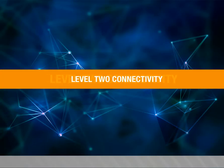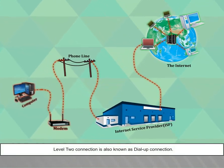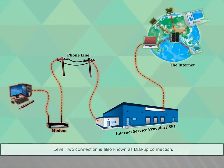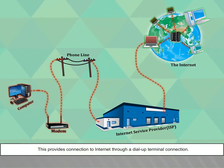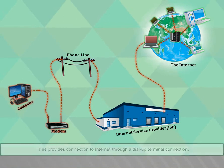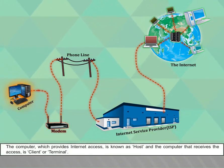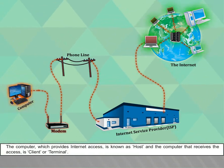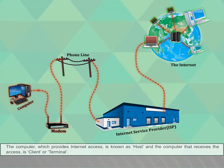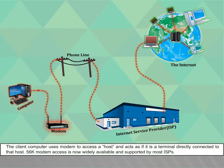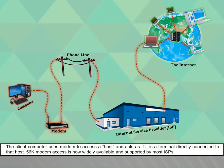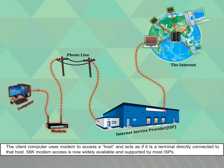Level 2 connectivity, also known as dial-up connection, provides connection to the internet through a dial-up terminal connection. The computer which provides internet access is known as the host, and the computer that receives access is the client or terminal. The client computer uses a modem to access a host and acts as if it is a terminal directly connected to that host. 56k modem access is now widely available and supported by most ISPs.